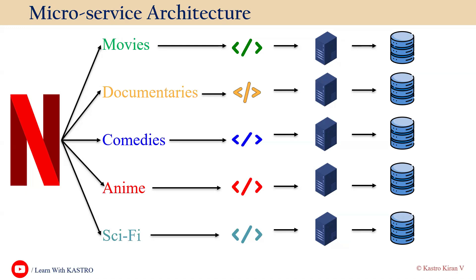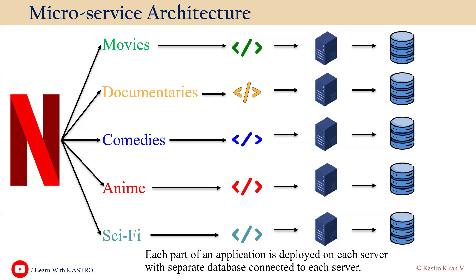In microservice-based architecture, for every component or category available in the application, there is a separate set of code deployed into a separate server, with a separate database for each. Each part of the application is deployed on its own server with a separate database connected to it — that's why it's called microservice-based architecture.